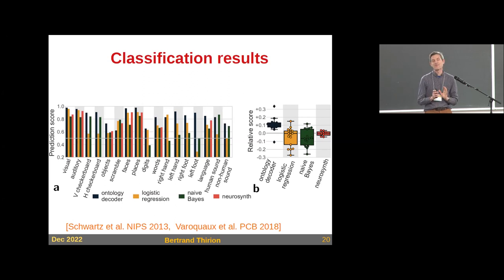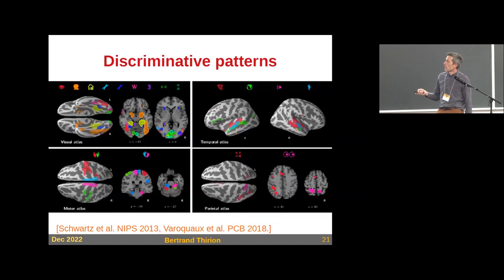Almost ten years ago, we did that by using relatively small datasets that we had annotated manually. We could decode 20 terms quite better than with state-of-the-art techniques. We used a so-called ontology decoder trying to have a common definition of concepts. We see it outperformed some baselines like Neurosynth, a tool people typically use for this kind of task. And we had brain regions corresponding to this decoding task.